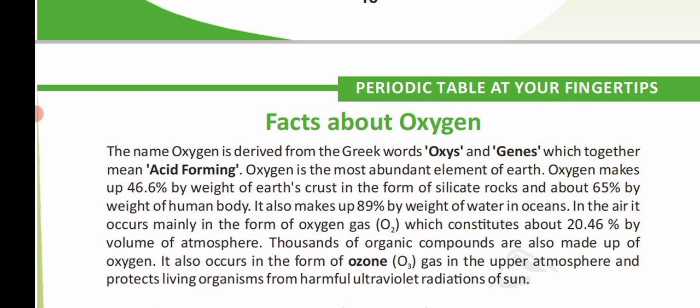Oxygen is the most abundant element of Earth. Oxygen makes up 46.6 percent by weight of Earth's crust in the form of silicate rocks, and about 65 percent by weight of the human body. It also makes up 89 percent by weight of water in the ocean. In the air, it occurs mainly in the form of oxygen gas.